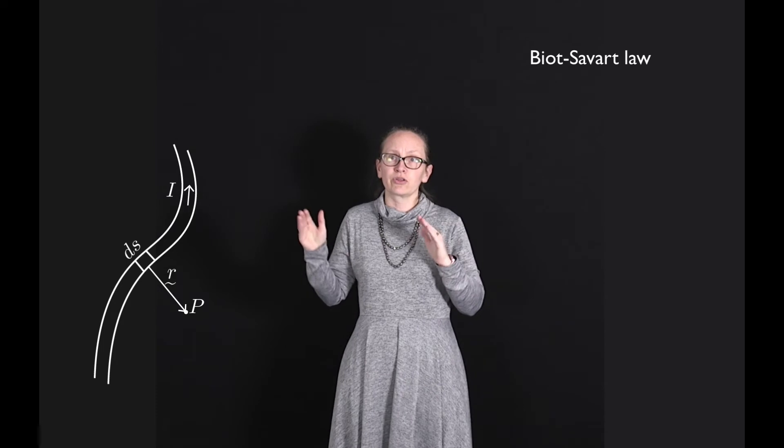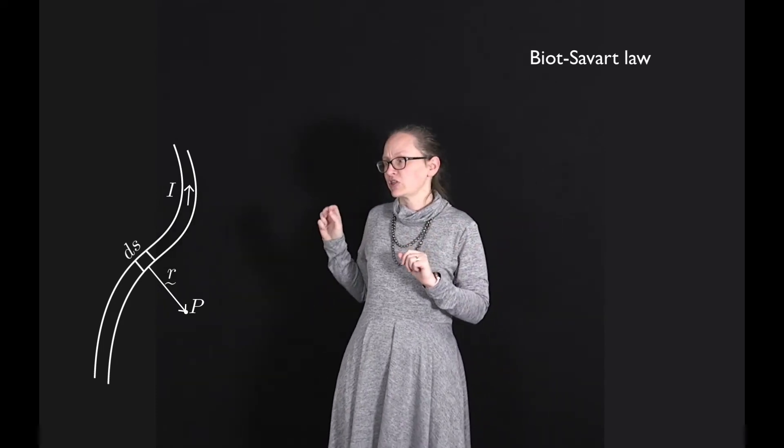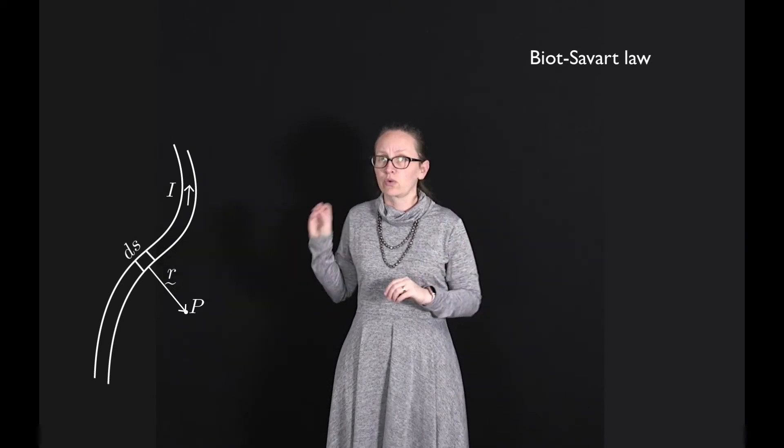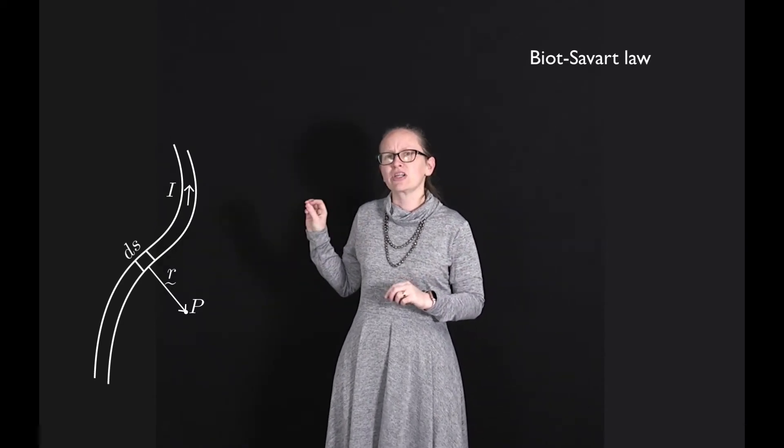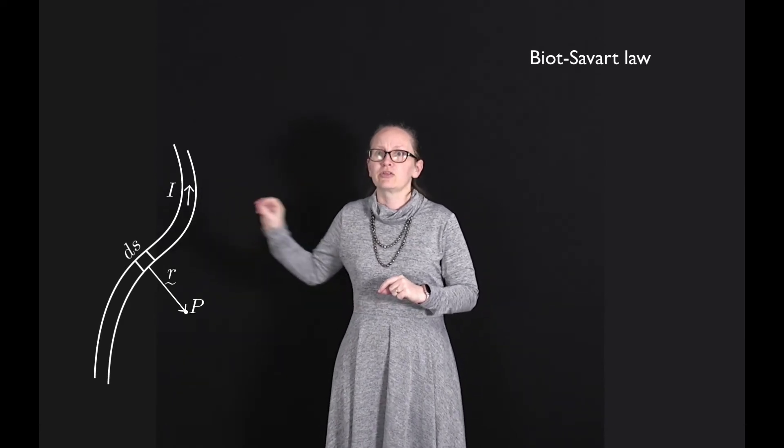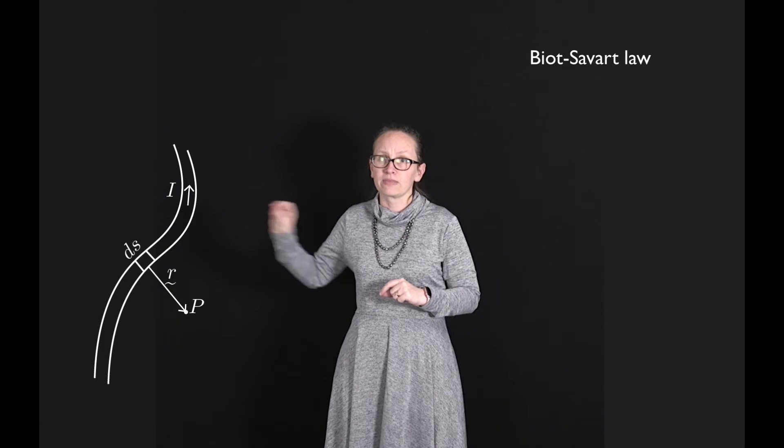The current through the wire is I, and we're considering just a small increment of that wire with a length ds. The question we want to know is how much magnetic field does just that small increment of current produce at point P which is the distance r from ds?